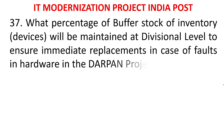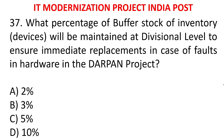MCQ 35: What percentage of buffer stock of inventory devices will be maintained at the divisional level to ensure immediate replacement in case of hardware faults under the DARPAN project? A) 2%, B) 3%, C) 5%, D) 10%. The answer is 5%. If a division has 100 devices, five devices (5%) will be kept as buffer stock in the divisional office for immediate replacement when a device fails.